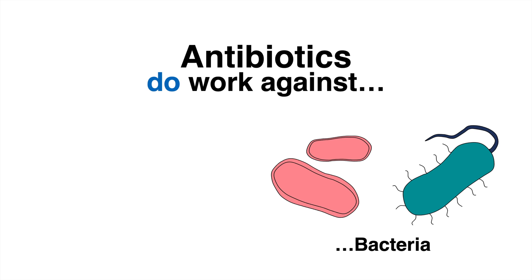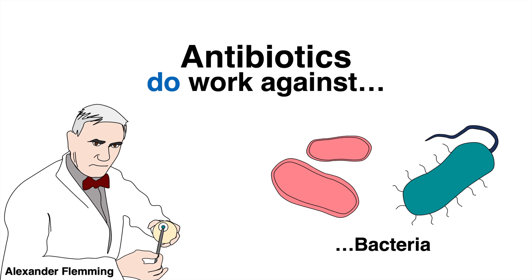The first antibiotic was discovered by Sir Alexander Fleming in 1928. He observed a spot in his petri dish where bacteria did not grow around fungi. These fungi produced an antibacterial substance which killed the surrounding microbes. It is commonly known under the term penicillin, which would later save millions of lives.